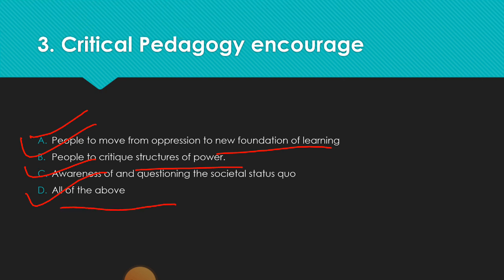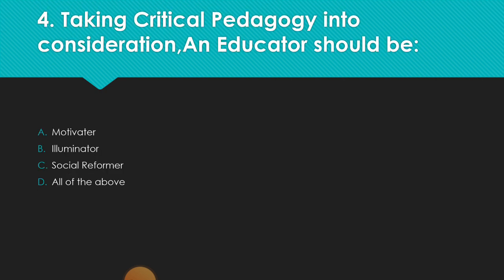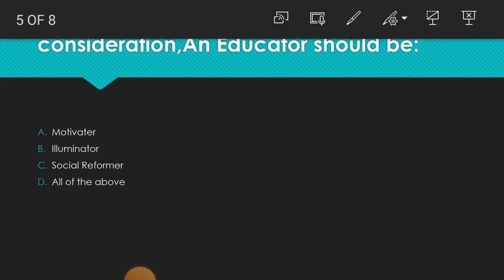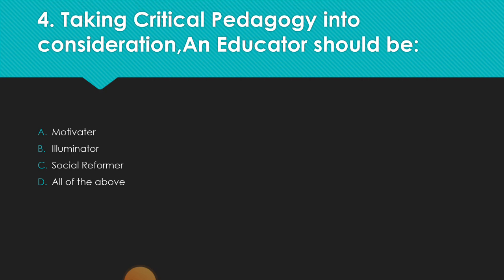The fourth question: Taking critical pedagogy into consideration, an educator should be — A) a motivator, B) an illuminator, C) a social reformer, or D) all of the above. According to critical pedagogy, an educator should be...